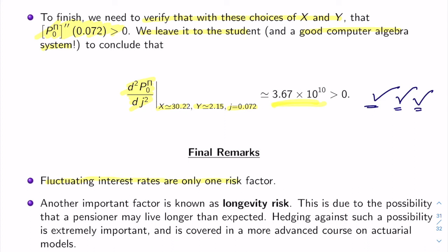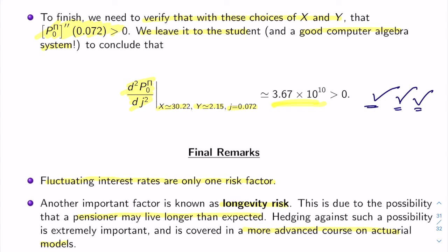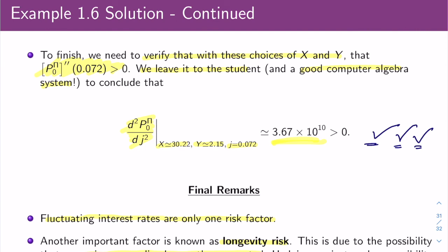A couple of real-world risks not accounted for here: interest rate risk from fluctuating rates (we assumed a flat yield curve; a non-flat curve makes things harder), and longevity risk — the possibility that pensioners live longer than expected. In a defined benefit pension plan, you must pay someone a fixed amount for the rest of their life, so hedging longevity risk is extremely important. These topics are covered in more advanced actuarial models courses. That's the last lecture for this class — thank you very much.